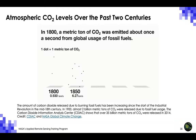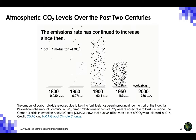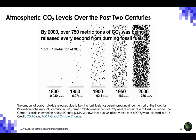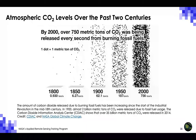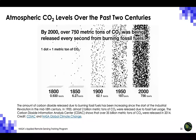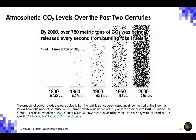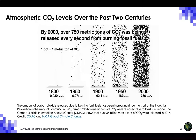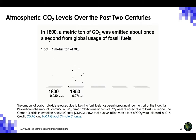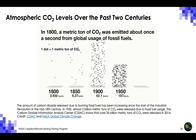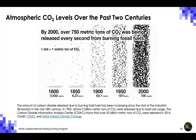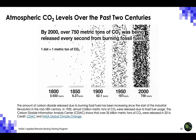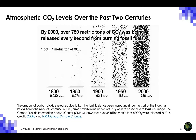This animation shows atmospheric carbon dioxide levels over the past two centuries. The amount of CO2 released due to burning fossil fuels has been increasing since the start of the Industrial Revolution. One dot in the animation represents one metric ton of carbon dioxide. In 1800, less than one metric ton of CO2 was released each second. By 1900, that number had jumped to 62 metric tons per second, and by 2000, we were releasing 756 metric tons of CO2 every second from burning fossil fuels.